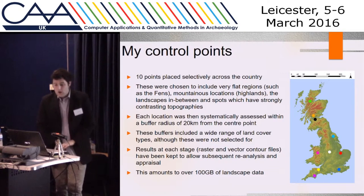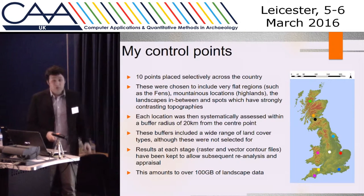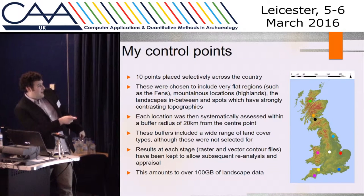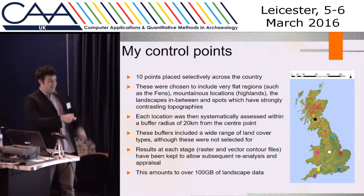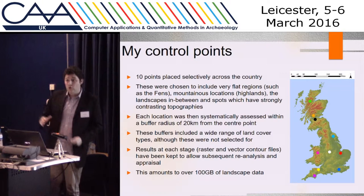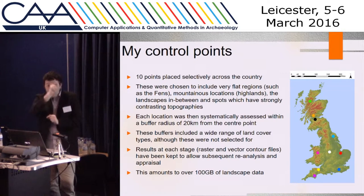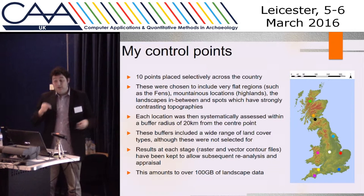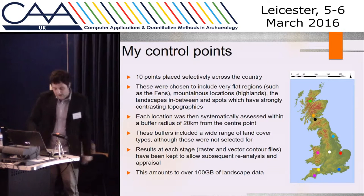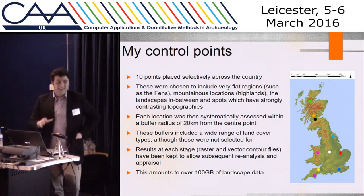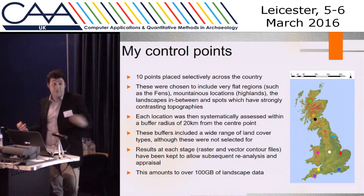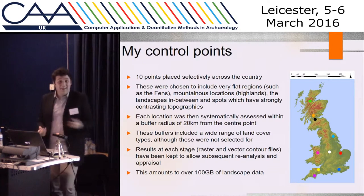What I did was choose 10 control points across the UK, selected specifically for variation in slope — from mountainous areas in Scotland to completely flat plains in the Fens. Around each I drew a 20-kilometer buffer radius, and those are the landscapes I'm analyzing. I then used all of this data to create huge numbers of different cost surfaces — I've filled about three memory sticks and have 100 gigabytes of rasters — all of which I've been comparing against one another. I'm very happy to share that data.